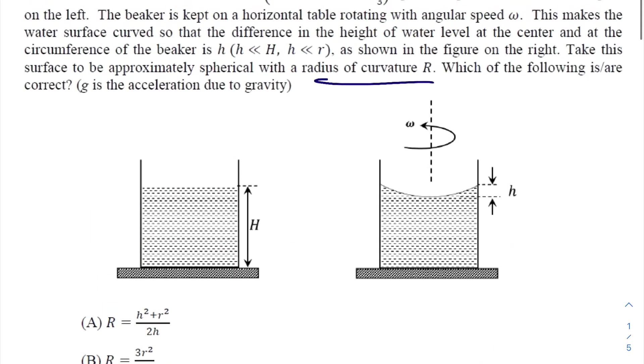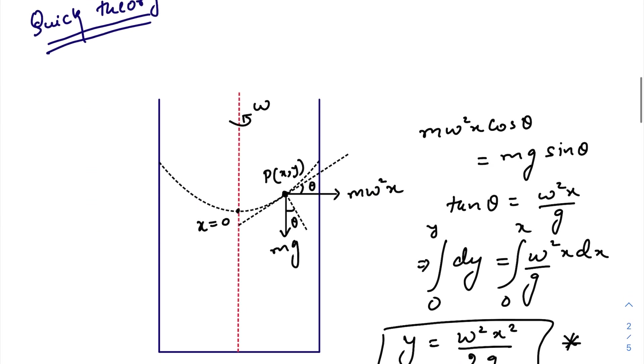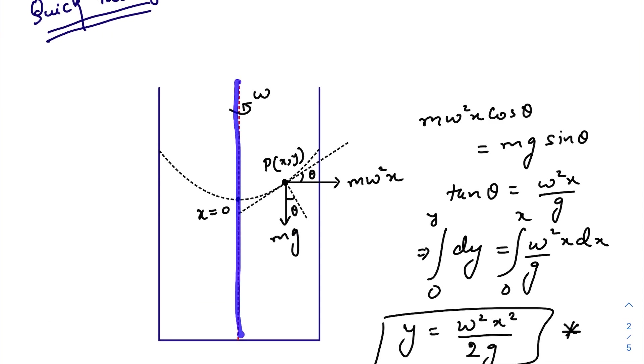So let us come to our first question, first option. But before that, let me discuss a quick theory here. Now when you put water inside a beaker and rotate it with an angular velocity ω, keeping the main geometrical axis of the cylinder as the revolving axis, this is the parabolic shape that the top layer will form. Let us take this one as the origin as x = 0, and at any point P the centrifugal force will be ω²x and the weight mg...